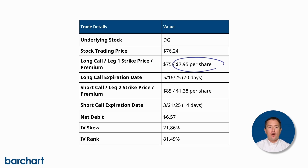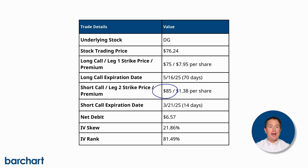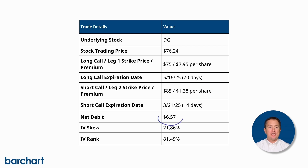The long call will expire in 70 days on May 16, 2025. Meanwhile, the short call strike will be $85 and will expire in 14 days on March 21, 2025, and you'll receive $1.38 per share for it, which brings your net debit to $6.57.